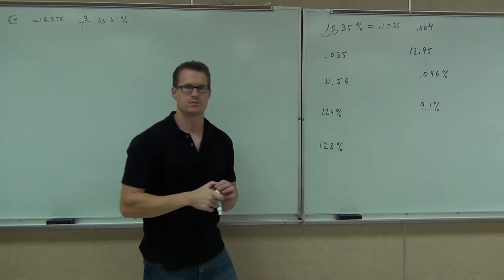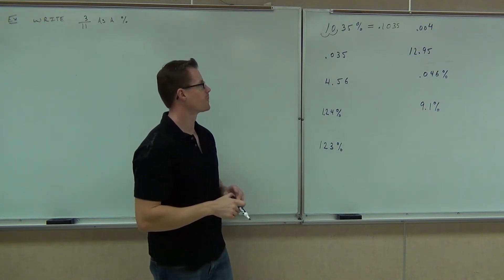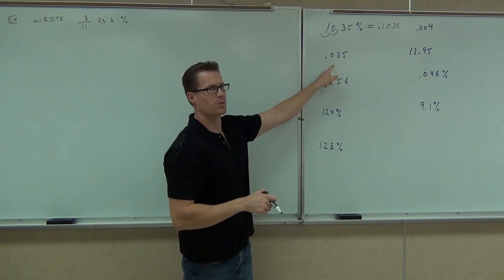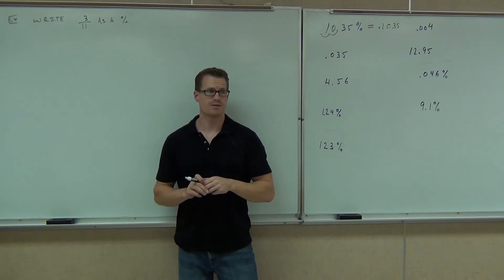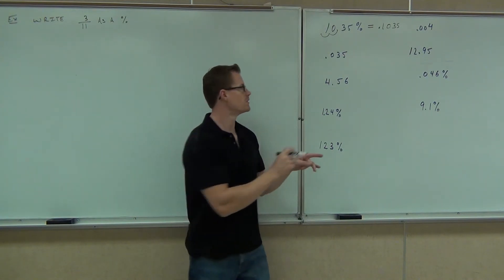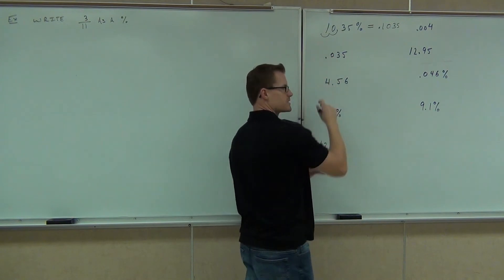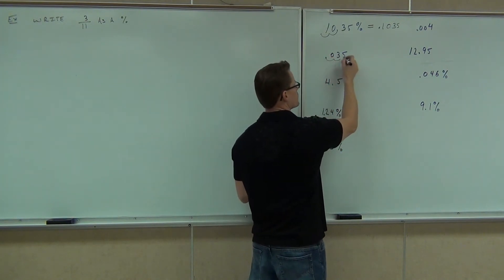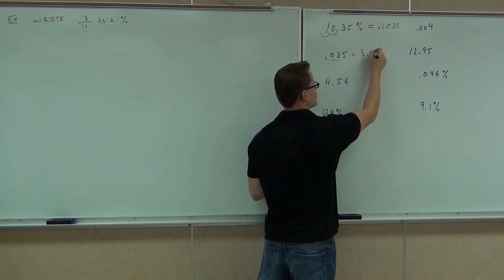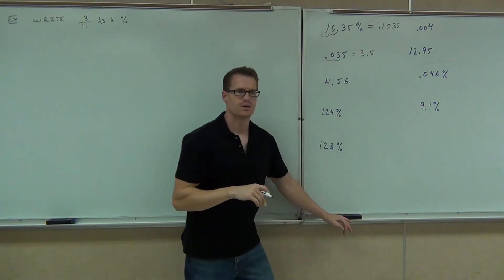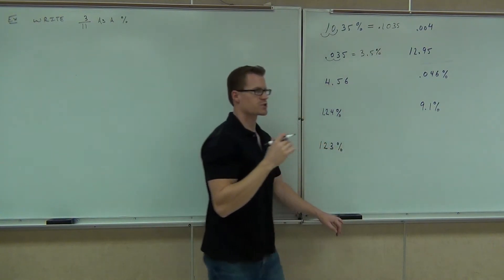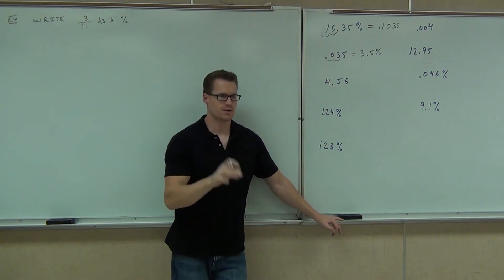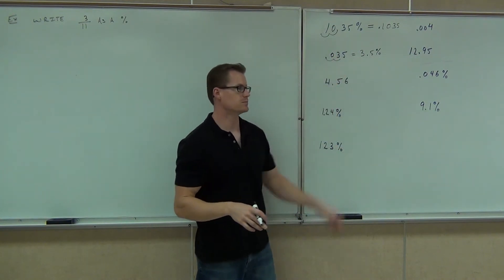Did you get that one? How about that one? Does it have a percent already? No. In order to get a percent, I've got to multiply it by 100. So am I going to move to the left or right? Right. How many spots? Two — it's always two, no matter what. You should get 3.5%. Make sure you show the percent sign. One number should have the percent, one number shouldn't. The percent should look bigger than the decimal.